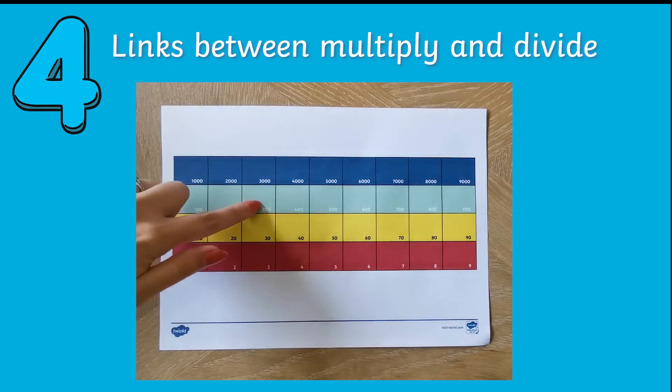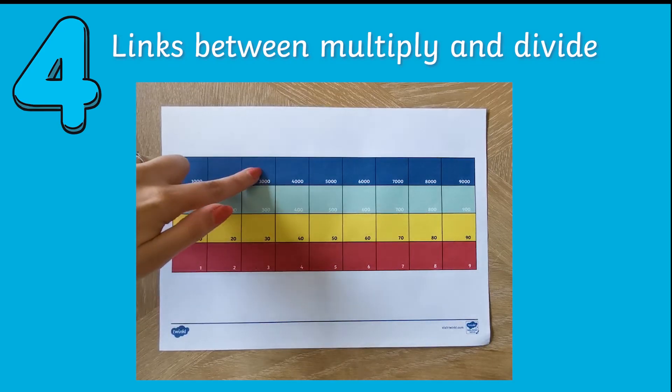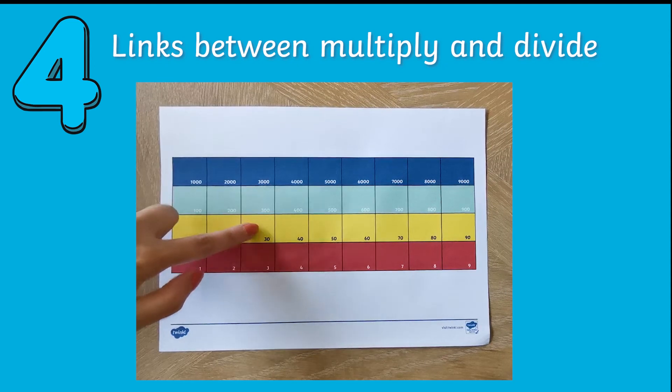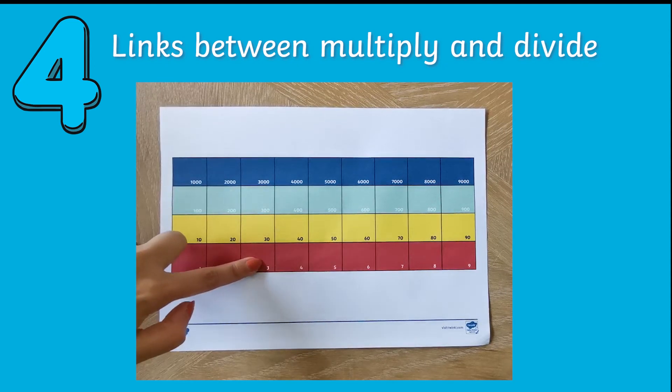You can multiply by ten to go up a row, or divide by ten to go down a row.